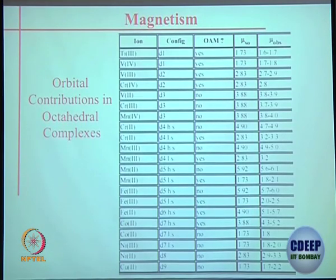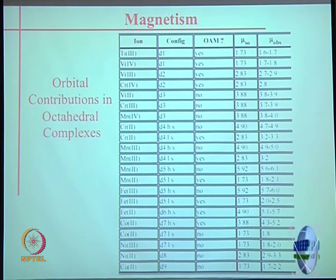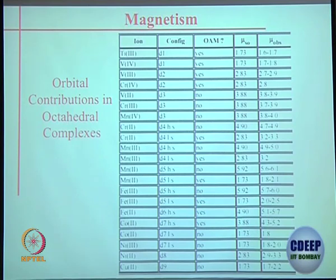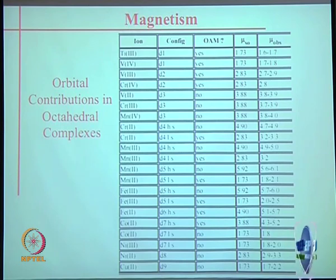For d¹ through d¹⁰, you can write down the t2g and eg electronic configuration and determine whether orbital angular momentum contribution is possible. d¹ — orbital angular momentum possible; d² — possible; and so on up to d¹⁰. You do not have to memorize this table but you can justify each case by going through them one by one.